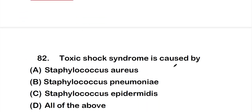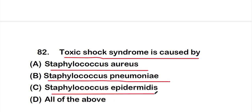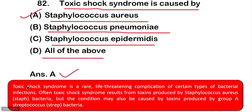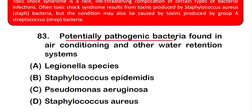Question number 82: Toxic shock syndrome is caused by — option A: Staphylococcus aureus, option B: Staphylococcus pneumoniae, option C: Staphylococcus epidermidis, or option D: all of the above. The answer is option A, Staphylococcus aureus. Toxic shock syndrome is a rare life-threatening complication of certain bacterial infections, often resulting from toxins produced by Staphylococcus aureus, though it may also be caused by toxins from group A Streptococcus bacteria.